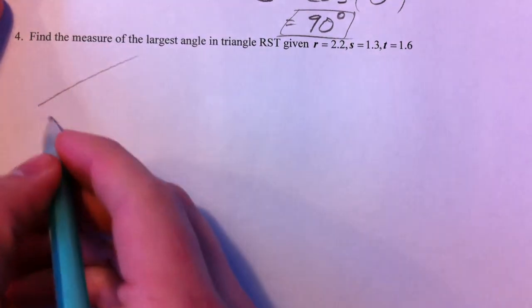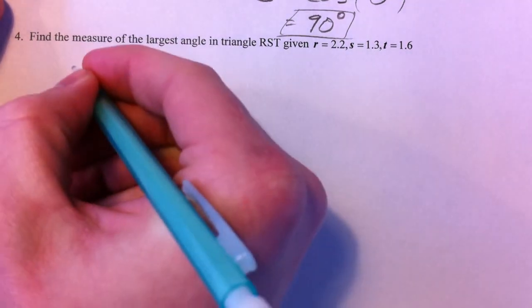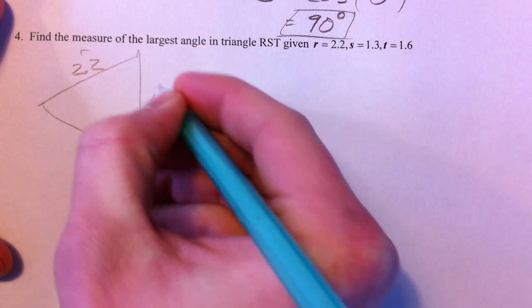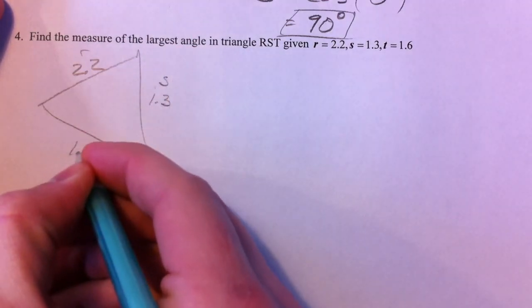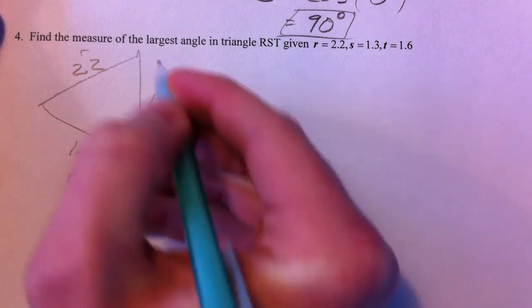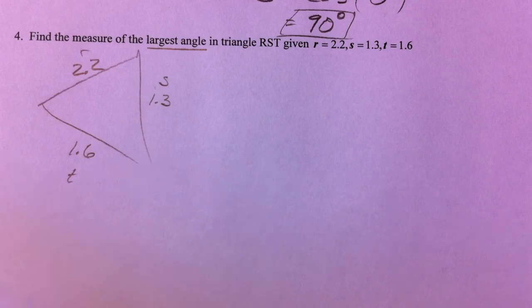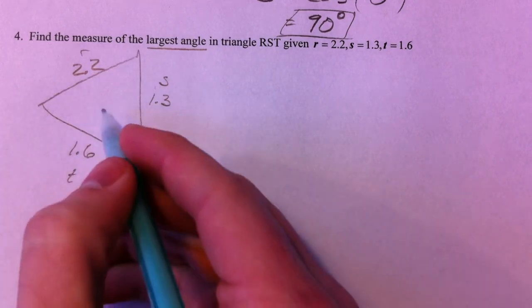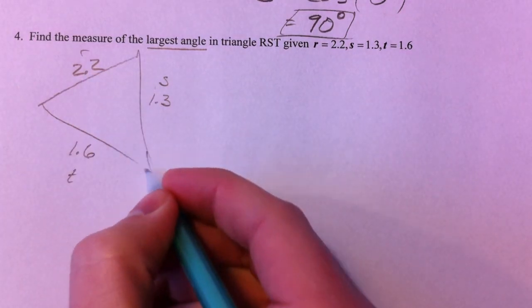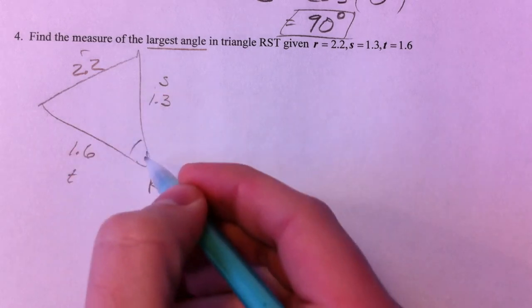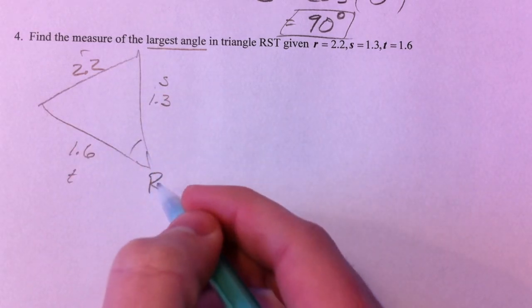Last example for law of cosines. 2.2 is our R, 1.3 is our S, and 1.6 is our T. So let's find the measure of the largest angle. Talked last year in geometry, and the concept, the logic is still true, that your angle across from your largest side is your largest angle. It's got to be. So let's find angle R.